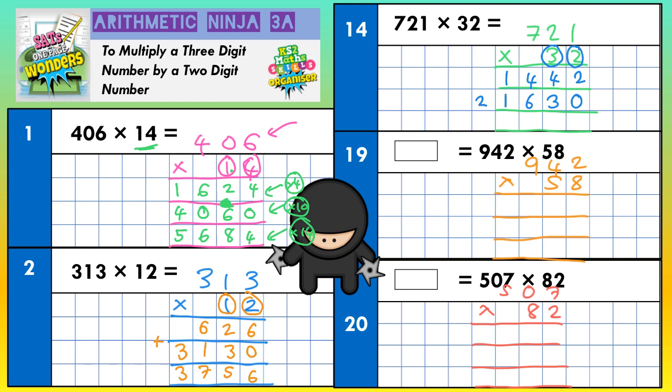All we've got to do now is add the two lines together. 2 plus nothing is 2, 4 plus 3 is 7, 4 plus 6 is 10 — put the 0 in, carry the 1. 1 plus 1 is 2, plus the 1 I've just carried is 3. And then nothing and 2 is 2. Final answer: 23,072.